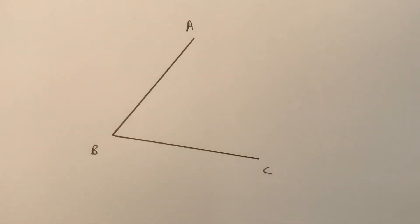Bisect a given angle ABC. We're trying to divide this angle into two equal parts.